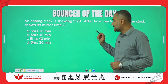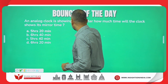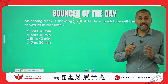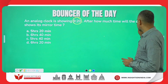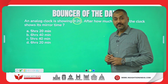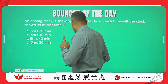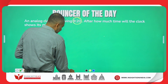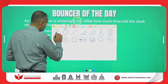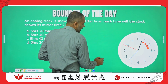The question says an analog clock is showing 9:20. After how much time will the clock show its mirror time? 9:20 will look something like this.